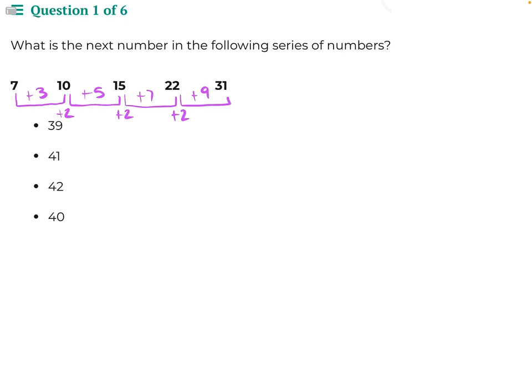So if we wanted to find the next number in our series, we would need to increase our difference by 2, which would turn 9 into 11. Then we would add 11 to 31. When we do that, we get 42, making it our answer for this problem.